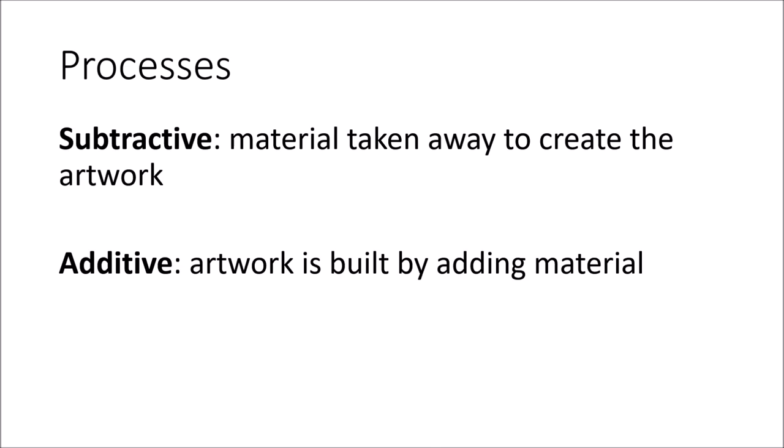When it comes to the processes, there are two major ways to break it down. You have subtractive and additive processes. A subtractive process is one where material is taken away to create an artwork. An example of this is carving — if you have a chunk of wood and you're carving away from it to make a statue, material is being taken away, so that's subtractive.